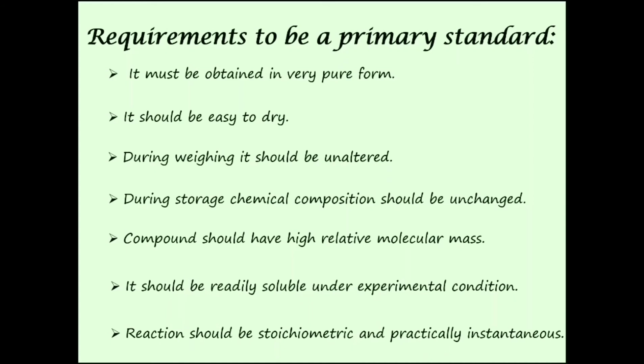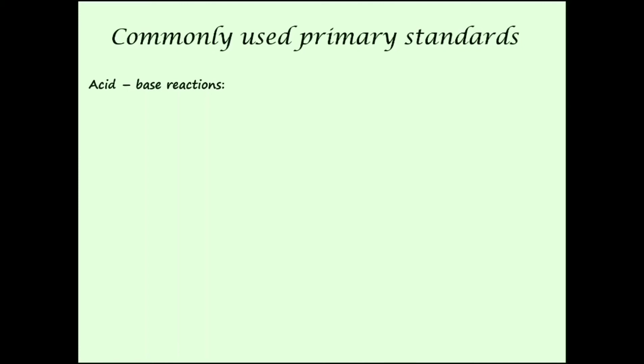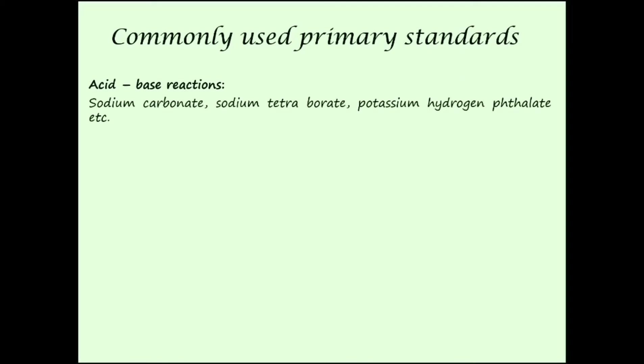To be a good primary standard, a compound must meet these criteria. Now, commonly used primary standards in various types of titrimetric analysis: First, in acid-base reactions — that is, acid-base titration — neutralization compounds are commonly used as primary standards, such as sodium carbonate, sodium tetraborate, potassium hydrogen phthalate, etc.